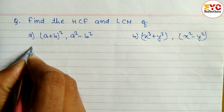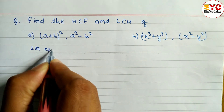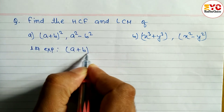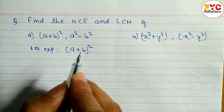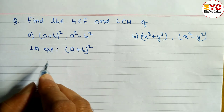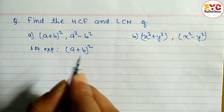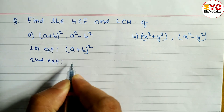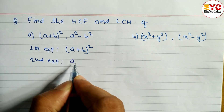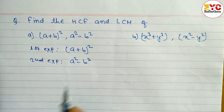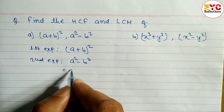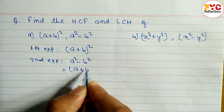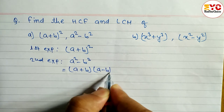Here we have the first expression: A plus B whole square. If the question is in the form of a whole square or whole cube, do not use the formula. Now, in the second expression we have A square minus B square. The formula of A square minus B square is A plus B, A minus B.